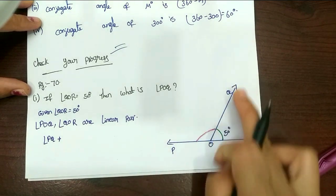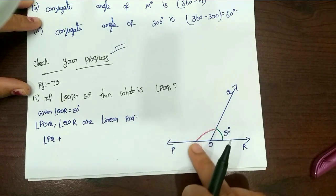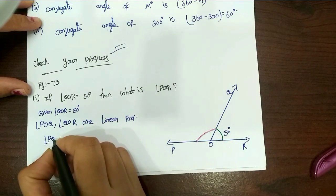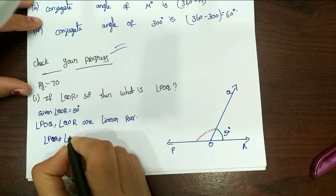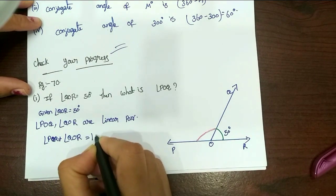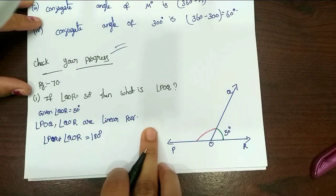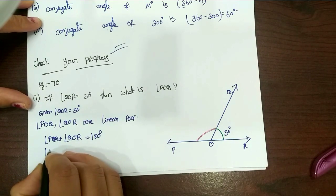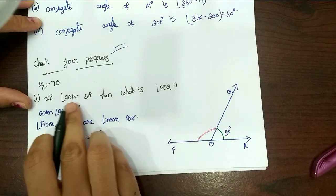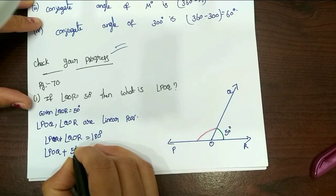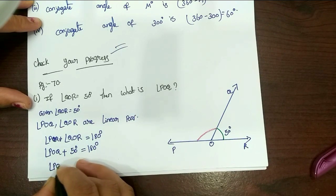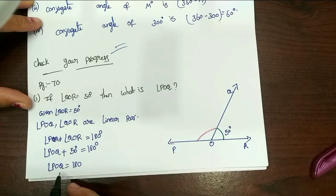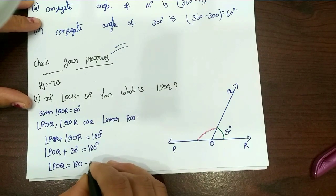So writing the equation: angle POQ plus angle QOR equals 180. Substituting, angle POQ plus 50 equals 180. Transposing, angle POQ equals 180 minus 50, which gives 130 degrees.